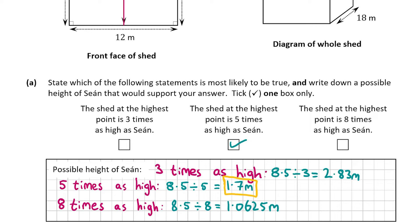Of course, that does not mean Sean is exactly 1.7 meters — it just means that of all the different possibilities, that's the most likely one, as he's probably not as tall as 2.83 meters and probably not as small as 1.0625 meters. That's our answer for part A, which was worth five marks.